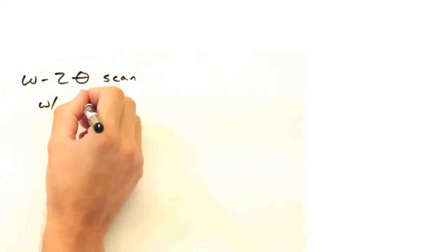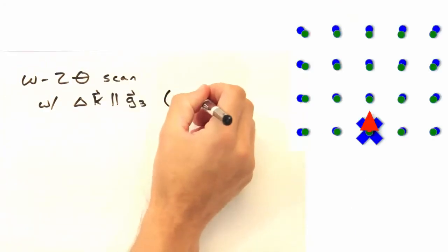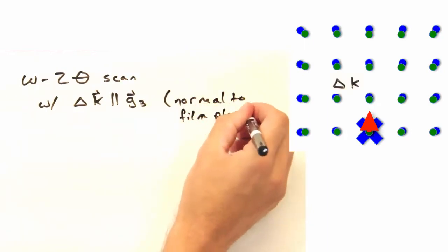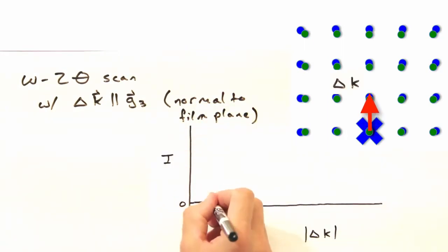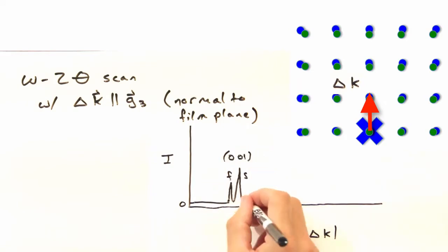Then if we did an omega 2 theta scan, where delta k points in the G1 direction, the first reflection we'd see is the 001 for the thin film and then the same reflection for the substrate.